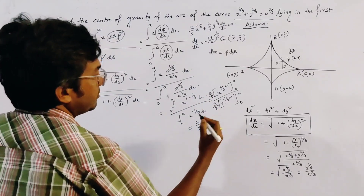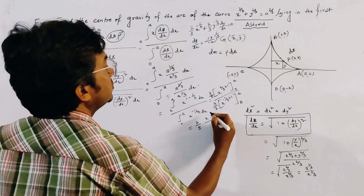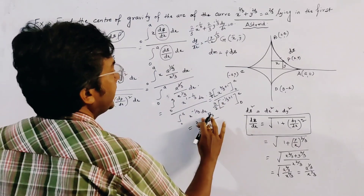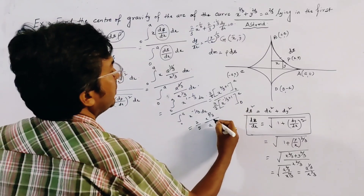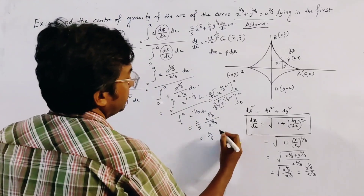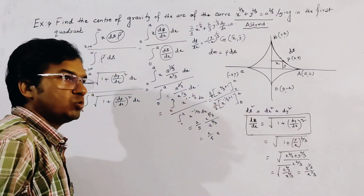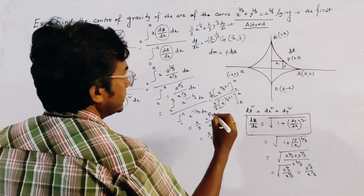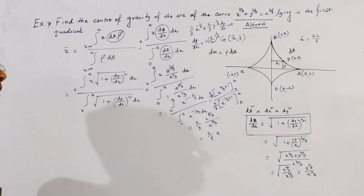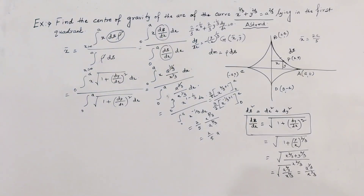For the upper portion we get (3/5)·a^(5/3), and for the lower portion we get (3/2)·a^(2/3). So x̄ = (3/5·a^(5/3)) / (3/2·a^(2/3)) = (2/5)·a^(5/3 - 2/3) = (2/5)·a. The 3s cancel, giving x̄ = 2a/5. This is the first result for the center of gravity.